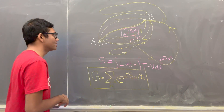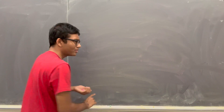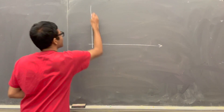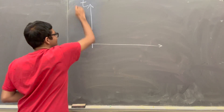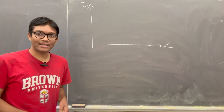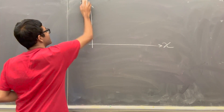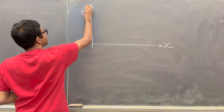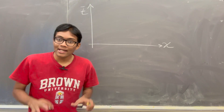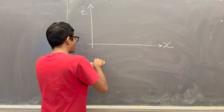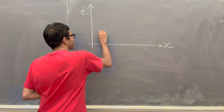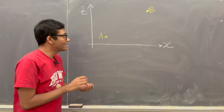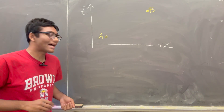Let's put it in action and see how it works. Let's say we have our same thought experiment. We have time on the y-axis and position on the x-axis. We're going to consider the probability that an electron starts from here — call it point A — and makes it over to point B. That's the probability we're going to consider.